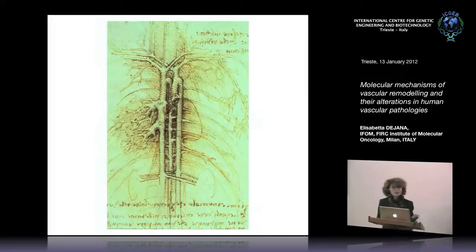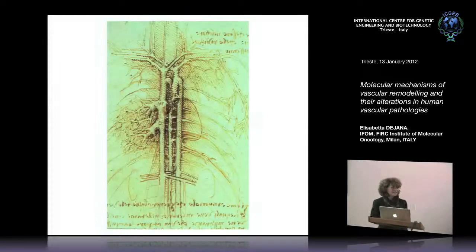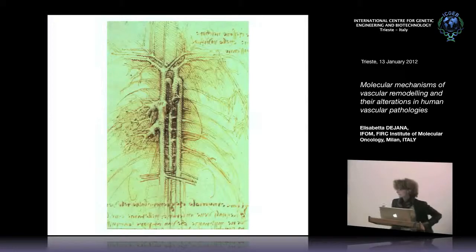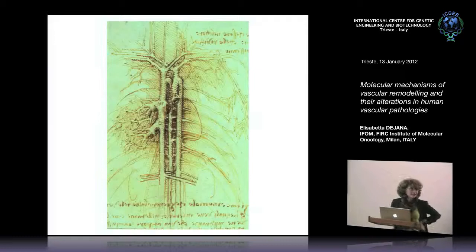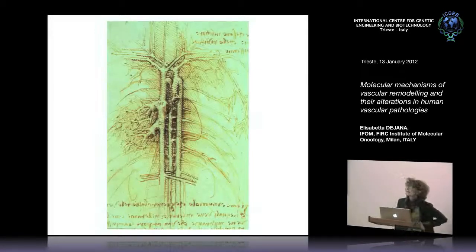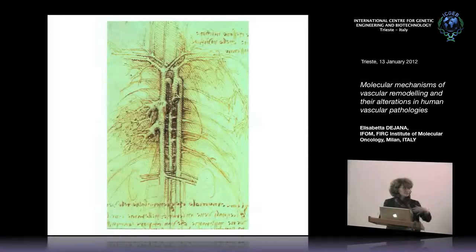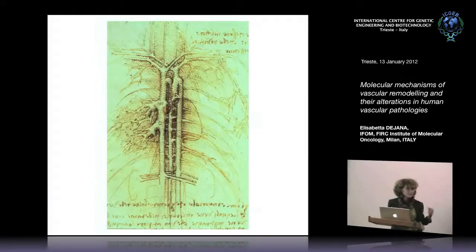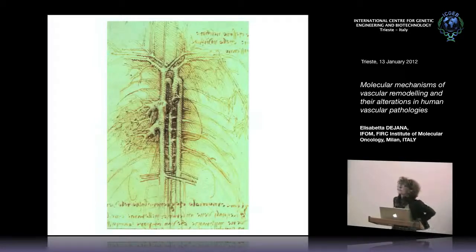As you might know, Leonardo went nighttime to do autopsy on dead people just to understand how anatomy worked. He already started to understand how our vascular system is organized. His idea of how the vascular system develops was very romantic — he thought the heart was a seed, and from the seed, like a tree, all the branches would develop and all the vessels would get organized.